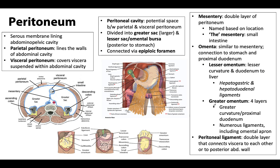That brings us to our summary slide, which contains a bit more information than typical, but this learning objective defines a lot of the terms we'll use throughout the rest of our discussions of gastrointestinal anatomy. Most of these terms describe specific areas of peritoneum — what differs is what they connect and where they are located. I highly advise taking time to be comfortable with these terms, because we'll be using them throughout the course and getting more specific as we do. If you have any questions, always feel free to reach out, and I hope you have a great rest of your day.